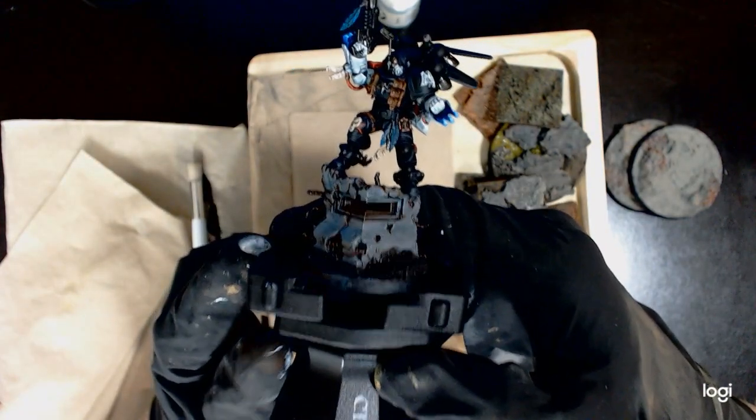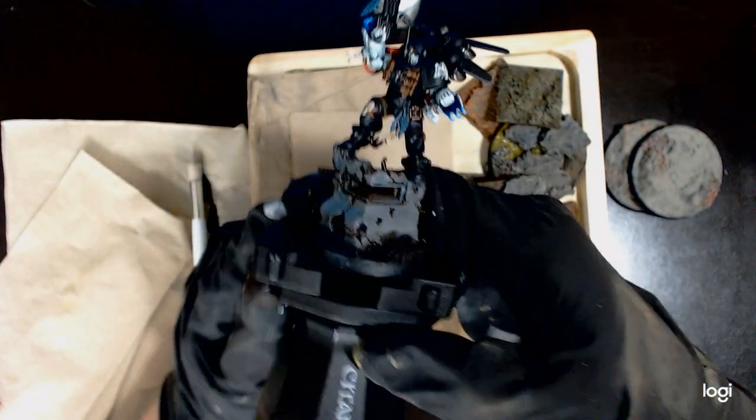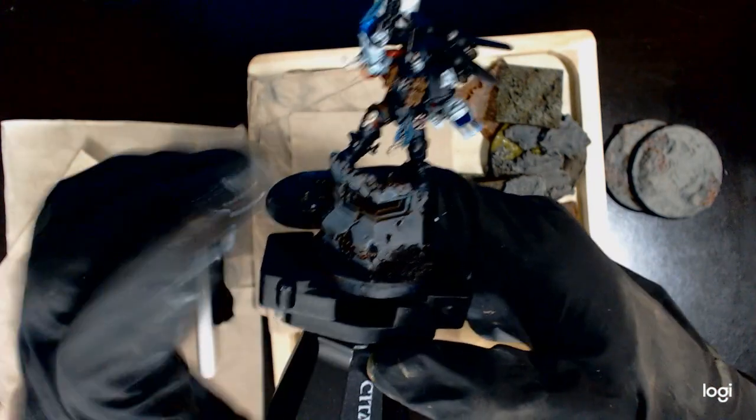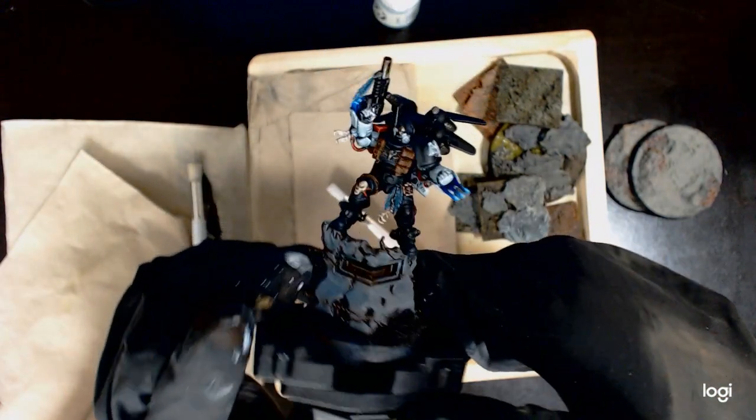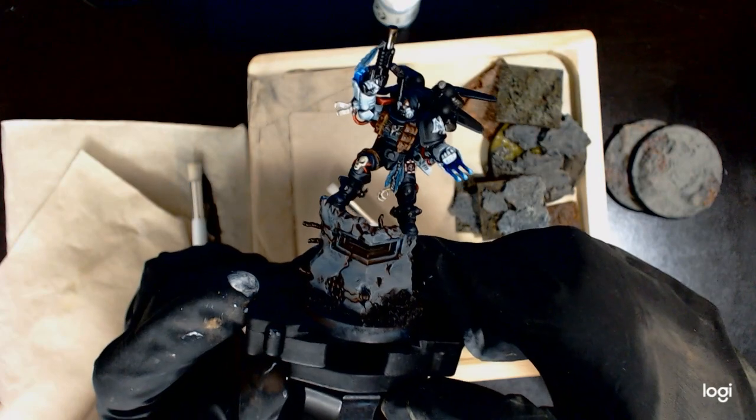What is going on everybody? We are working on Shrike, the chapter master of the Raven Guard. I've been doing this as a commission for a friend.